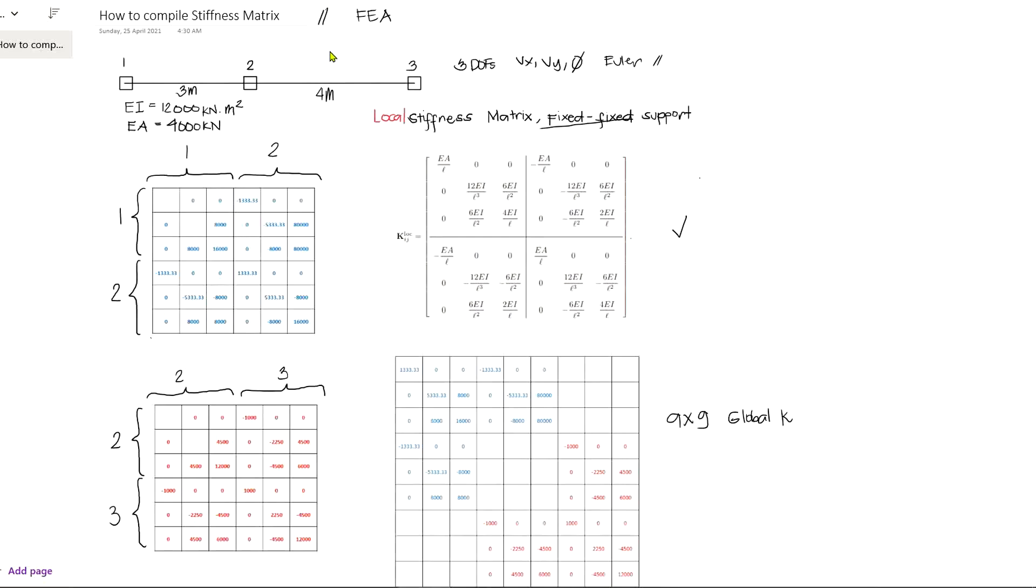Now let's get started. First, let us evaluate values of each entry of the local stiffness matrix. This part here is one, and here is two. Also this is one and two, which means that this is one-one, and this is one-two. This is two-one, and this is two-two.